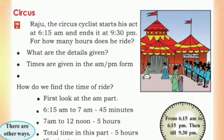Look at this picture — you can see a heading 'Circus'. So Raju, the circus cyclist, starts his act at 6:15 AM and ends it at 9:30 PM. For how many hours does he ride? So we want to find the total hours he rides the cycle.